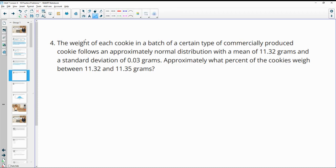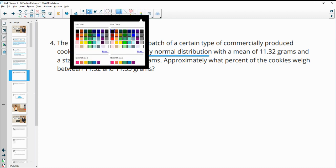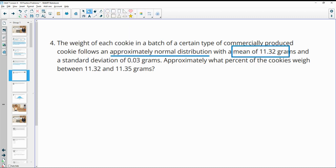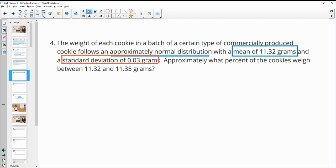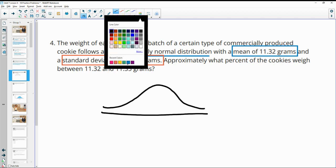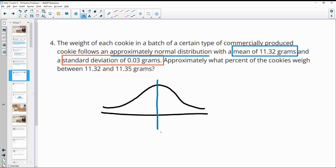Number four, the weight of each cookie in a batch of a certain type of commercially produced cookies follows an approximately normal distribution, with the mean being 11.32 grams and the standard deviation being 0.03 grams. A normal distribution looks like something like this. It has a curve in the middle and then goes back down. And then you have the mean right here in the middle, directly in the middle. In this case, the mean being 11.32 grams.